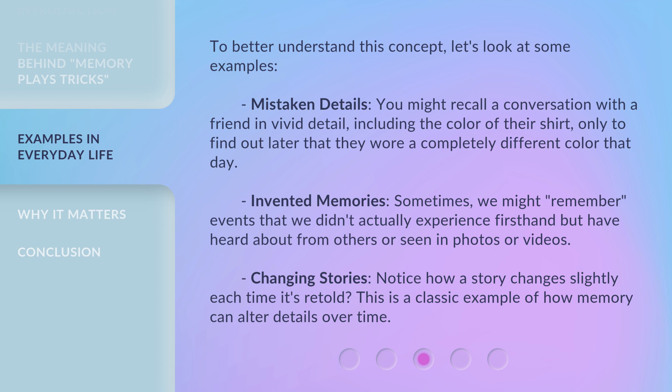To better understand this concept, let's look at some examples. Mistaken Details: You might recall a conversation with a friend in vivid detail, including the color of their shirt, only to find out later that they wore a completely different color that day. Invented Memories: Sometimes we might remember events that we didn't actually experience firsthand but have heard about from others or seen in photos or videos. Changing Stories: Notice how a story changes slightly each time it's retold — this is a classic example of how memory can alter details over time.